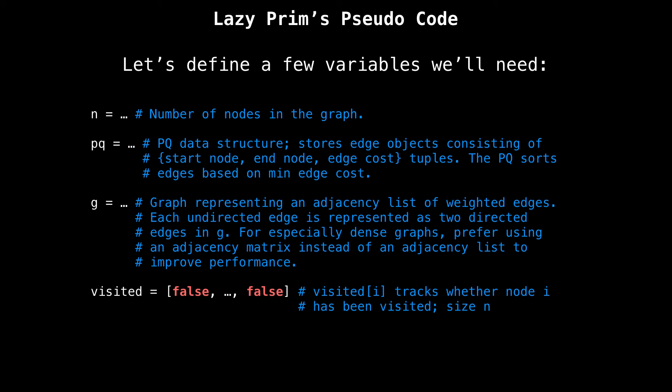Great, we now understand the gist of the lazy implementation of Prim's. Let's have a look at some pseudocode. Let me first define a few variables that we will need. First is n, the number of nodes in the graph. The variable pq represents the priority queue data structure. It stores the edge objects based on minimum edge cost. Again, each edge object consists of a start node and end node and an edge cost. Next is g, which represents the graph we're working with. G represents an adjacency list of weighted edges. In g, every undirected edge is represented as two directed edges. As a side note, if your graph is extremely dense, meaning it has numerous edges, you should probably prefer using an adjacency matrix instead of an adjacency list for efficiency and space gains. And lastly, a visited Boolean array of size n, which keeps track of whether node i has been visited or not.